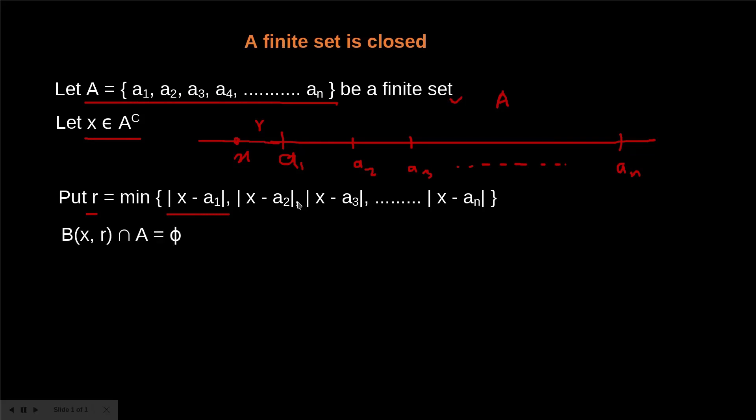So we can clearly say that an open ball B(X, r) intersection A is equal to phi. So this means if we make an open ball with center at X and radius r, we get an open ball like this. And we can see that this open ball B(X, r), it does not contain any of the points from set A, because it clearly lies outside of A. So B(X, r) intersection A is equal to phi.